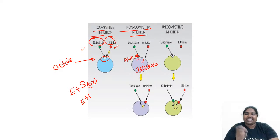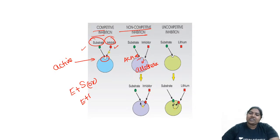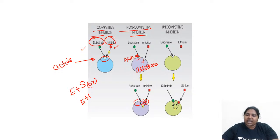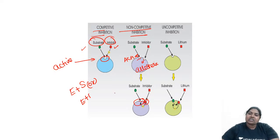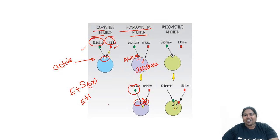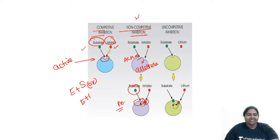In non-competitive inhibition, the substrate binds to the active site and the inhibitor binds to a different site — the allosteric site. When the inhibitor binds to the allosteric site, it causes a conformational change in the active site, so the substrate can no longer bind effectively.